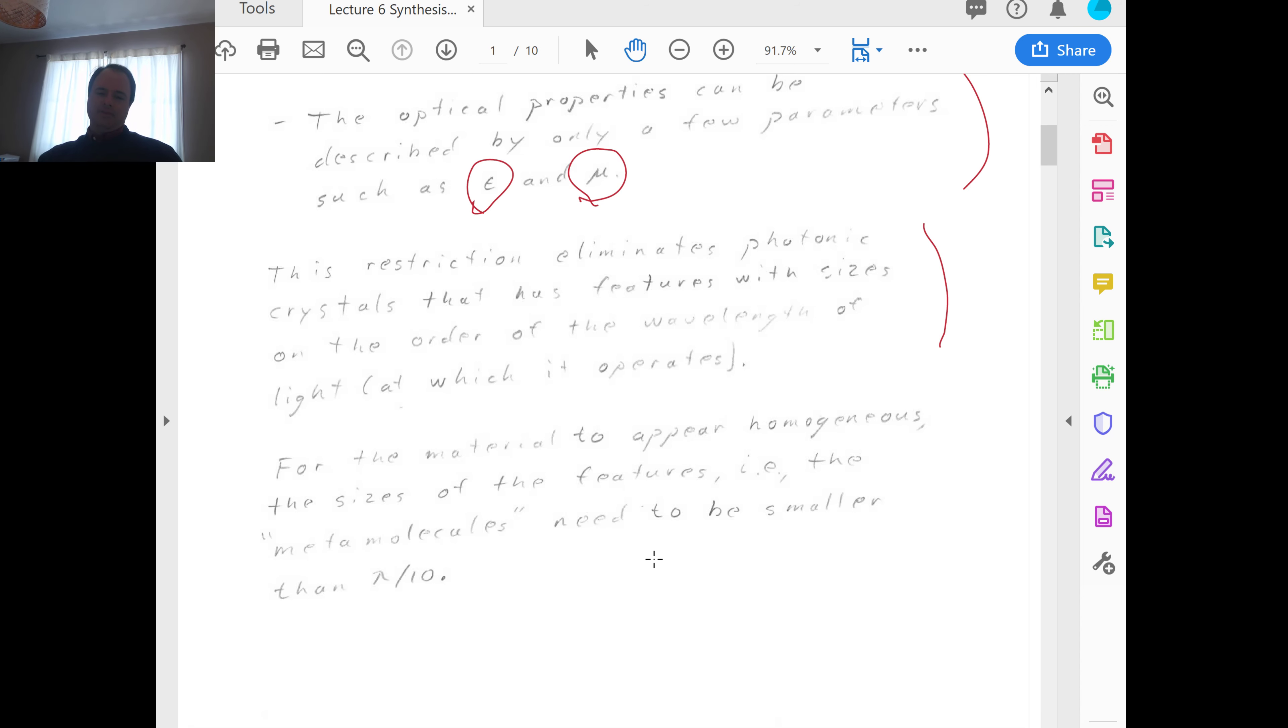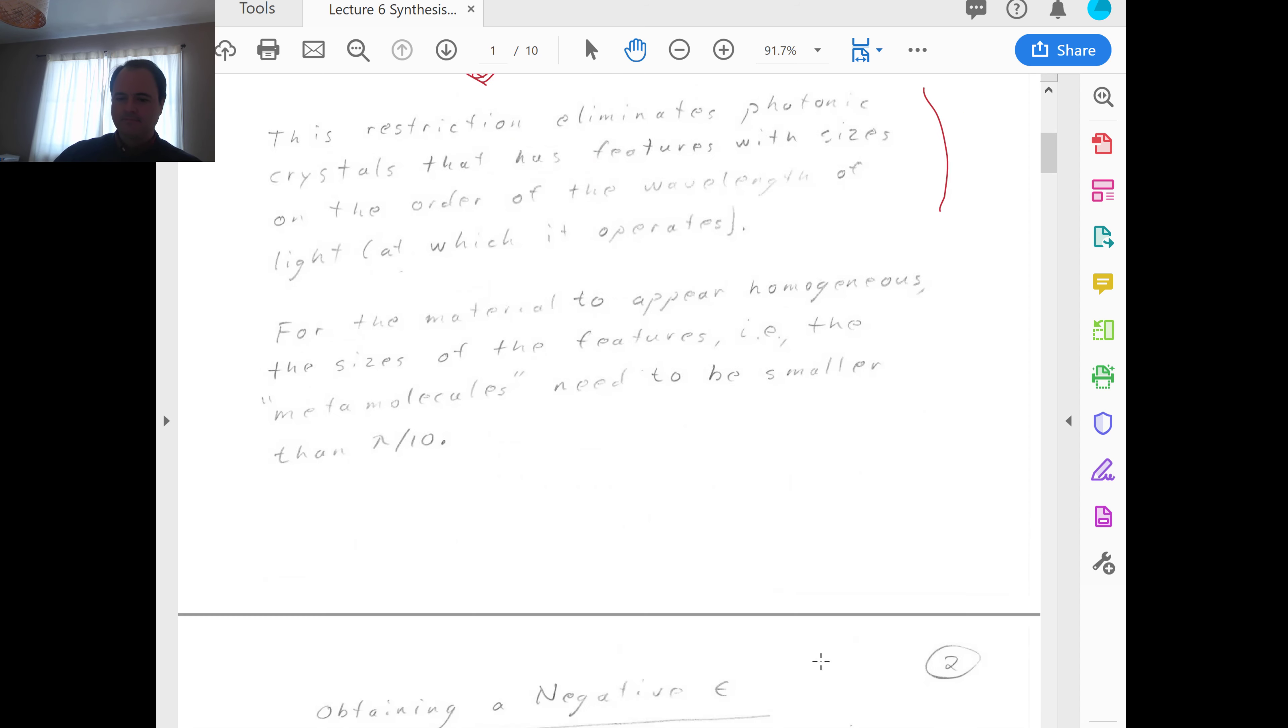So if the feature sizes are less than lambda over 10, where lambda is the frequency at which this material is supposed to operate, then the material will look to be homogenous, uniform from the perspective of light. And therefore, we will assign it different particular uniform values for epsilon and mu or position independent values for epsilon and mu.